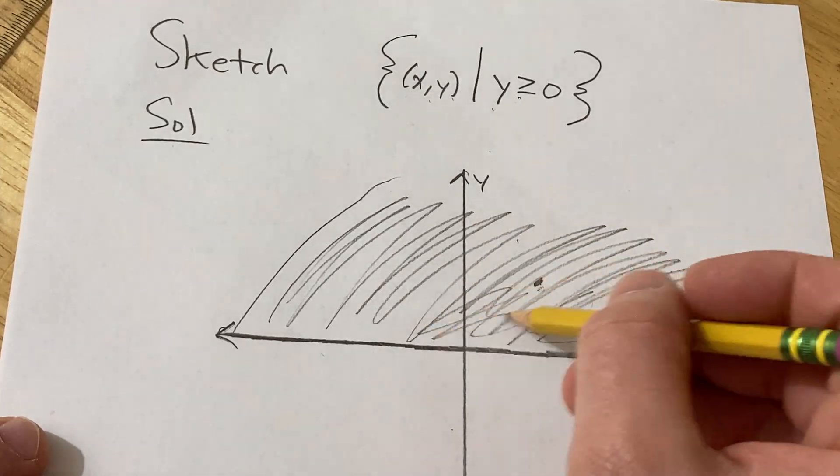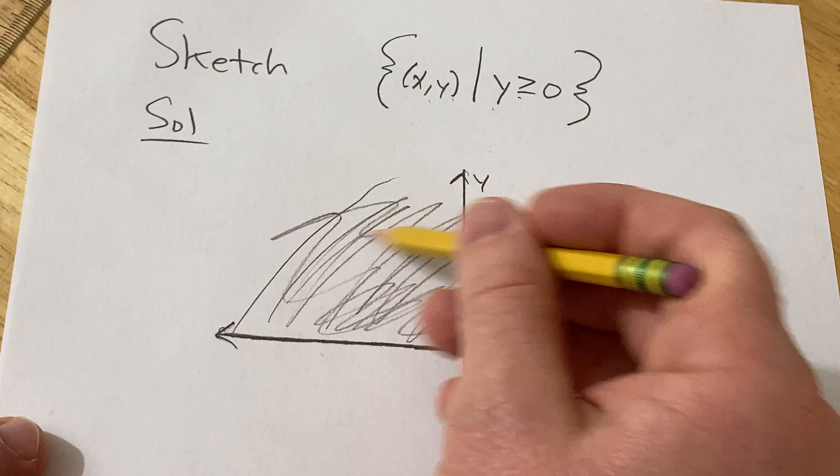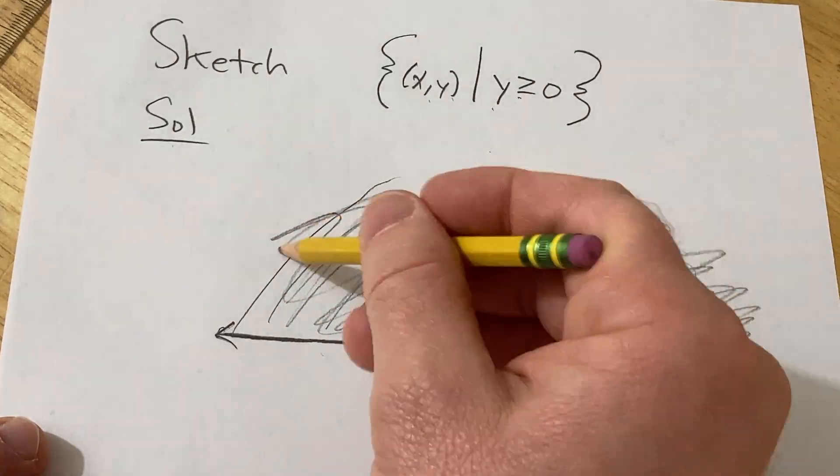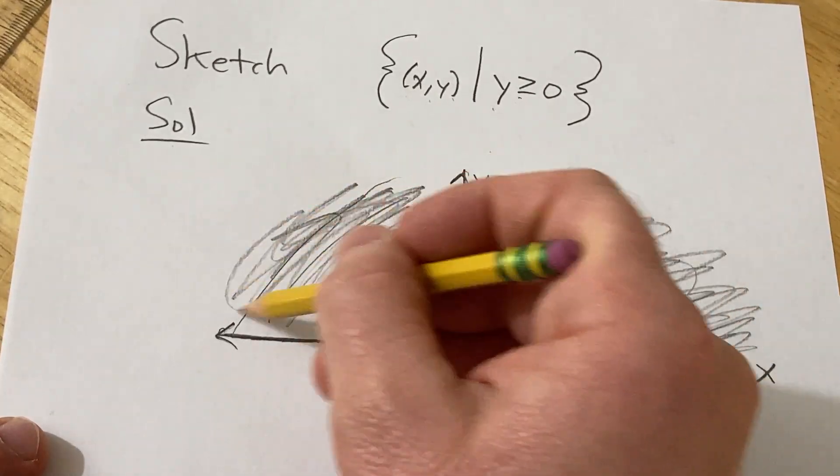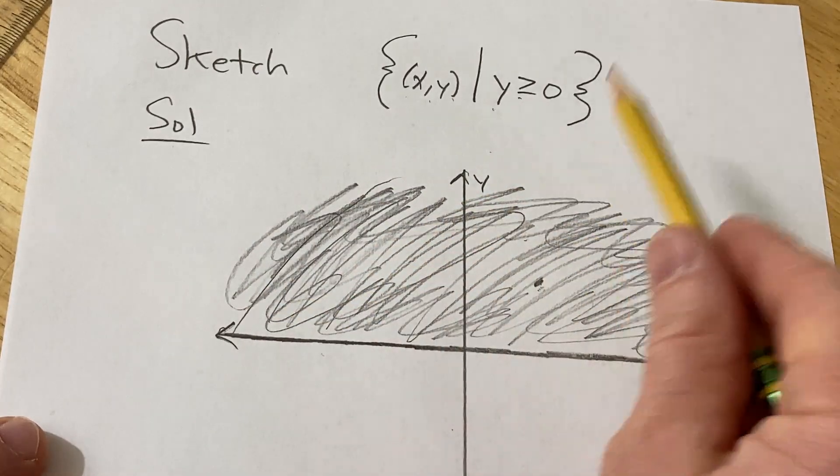So pretty much it's the upper half of the xy plane, including the x axis. So this would be the graphical representation of this set.